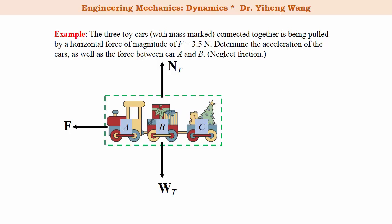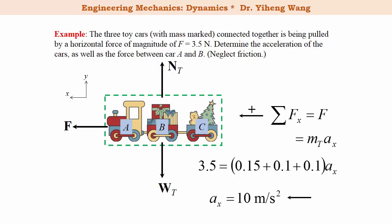Now before we write the equation of motion, we need to set up our coordinate system. We choose the positive x direction to be conveniently pointing to the left. Therefore the resultant force along the positive x direction, which is simply the applied force, 3.5 Newton, and this equals to the total mass times the acceleration along the x direction. We substitute in all the numbers, and we can calculate Ax to be 10 meters per second squared, also pointing to the left. And this is the answer to the first part of this problem.